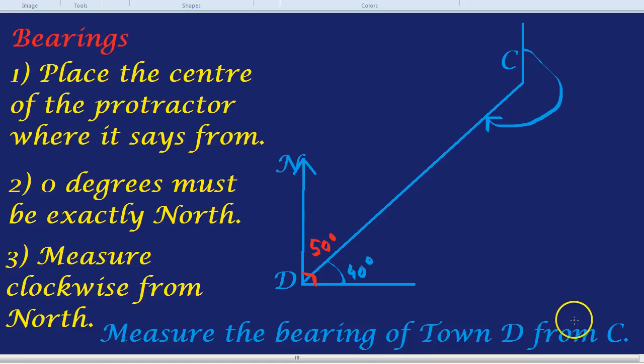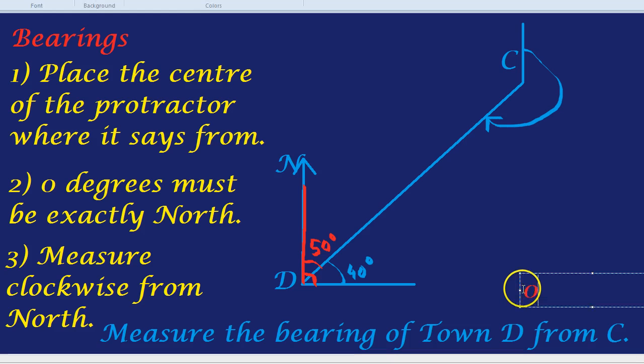I know the question is D from C, but let's pretend for a second they were asking us the bearing of town C from D. We'd have done north and would have measured clockwise until we face C. Bearings though always have to be three digits. So, if we wrote that answer it would have to be 050 degrees.